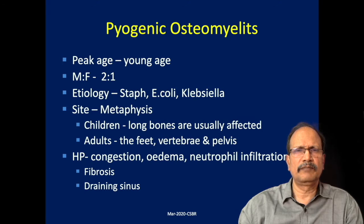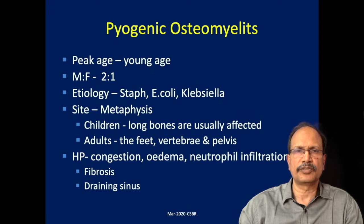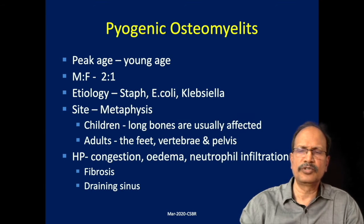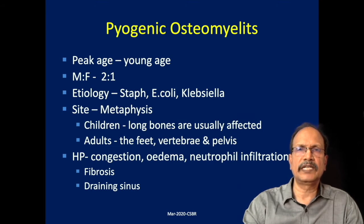Looking at the site of affection: in children, long bones are usually affected. In adults, it is the feet, vertebra, and pelvis that are affected in osteomyelitis. In histopathology you will see congestion, edema, and neutrophilic infiltration in pyogenic osteomyelitis. Fibrosis and draining sinuses usually manifest at a later stage when this acute phase progresses to chronicity.